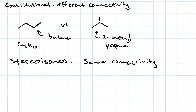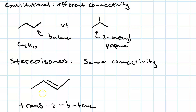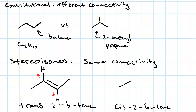Stereoisomers, on the other hand, have the same connectivity and the same chemical formula, but they look different. This molecule shown here, for instance, is trans-2-butene because one of the hydrogens is pointing up and the other one is pointing down. This is the stereoisomer of cis-2-butene. When we draw cis-2-butene, both of the hydrogens are pointing in the same direction — that's what makes it cis. So cis-trans is one variety of stereoisomers.